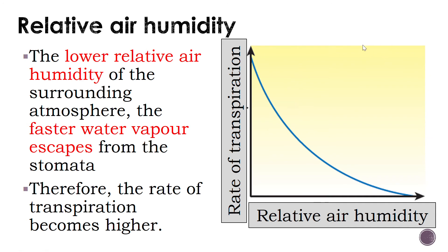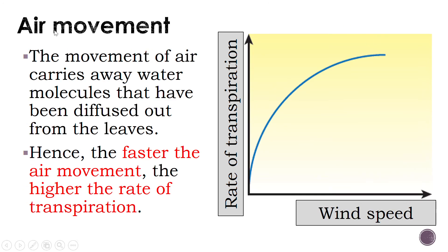The fourth factor is air movement (pergerakan udara), meaning the presence and speed of wind. From the graph, when wind speed is high, the rate of transpiration is also high. This is because when air moves, it carries away the water molecules from the area surrounding the leaf. This creates empty space near the leaf, making it easier for water molecules inside the leaf to diffuse out — hence faster air movement leads to a higher rate of transpiration.